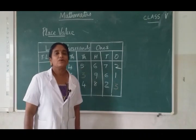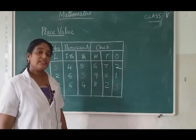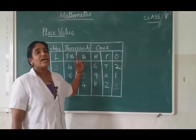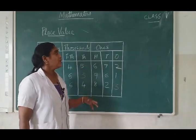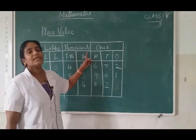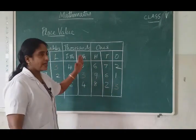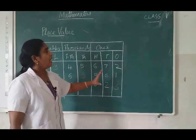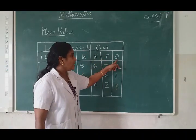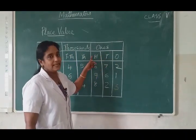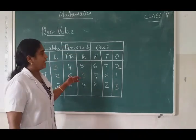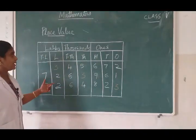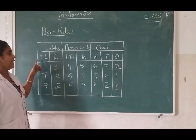Now we can discuss about the place value. What is the place value of a number? Place value gives the value of the digit. This is the Indian place value chart. It is divided into some periods. First is the ones period — under ones period: ones, tens and hundreds. Under the thousands period: thousands and ten thousands. Under the lakhs period: lakhs and ten lakhs.